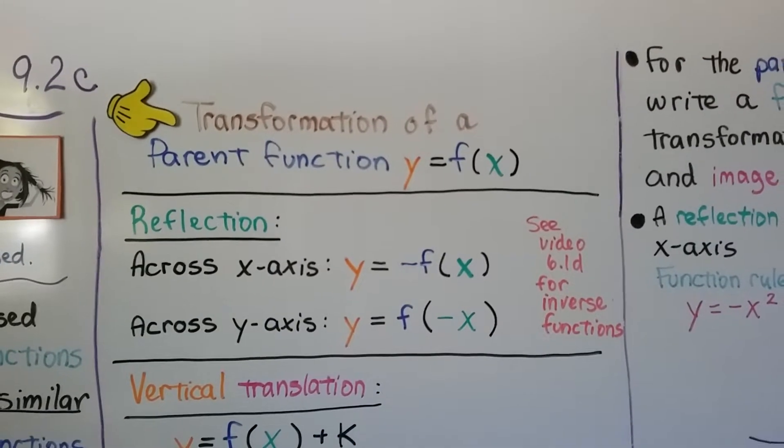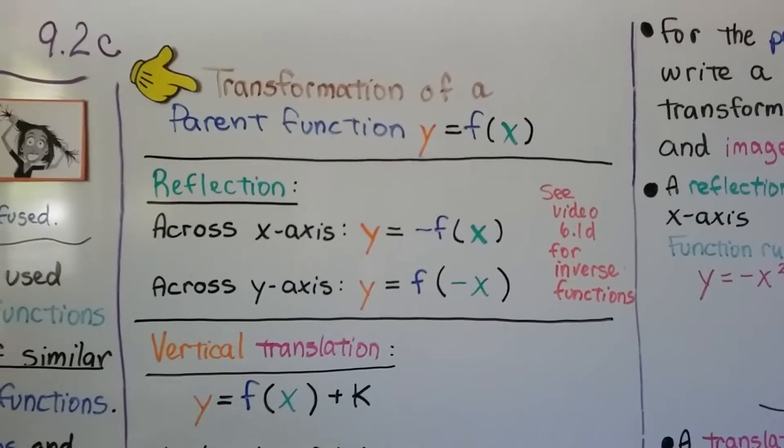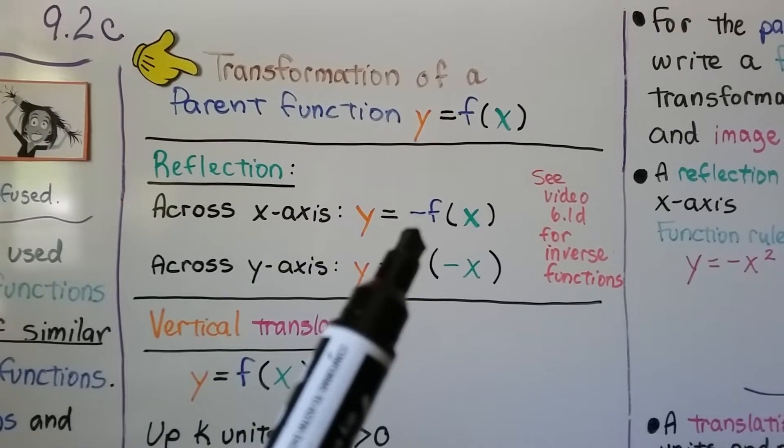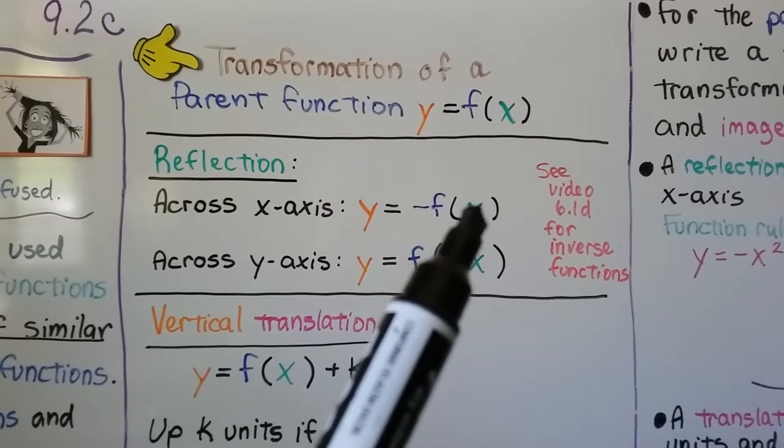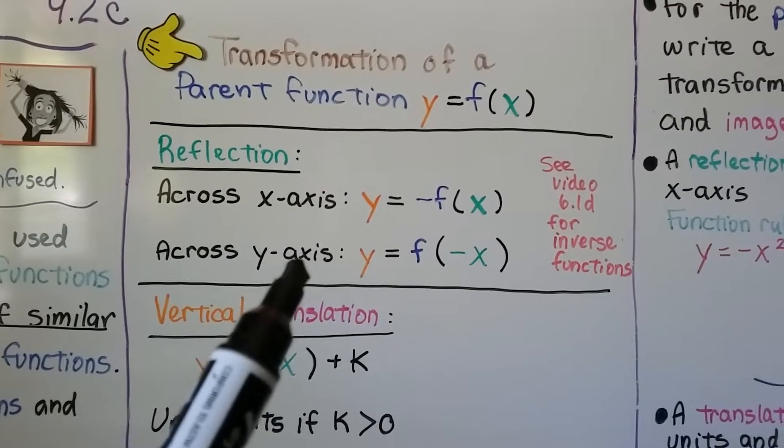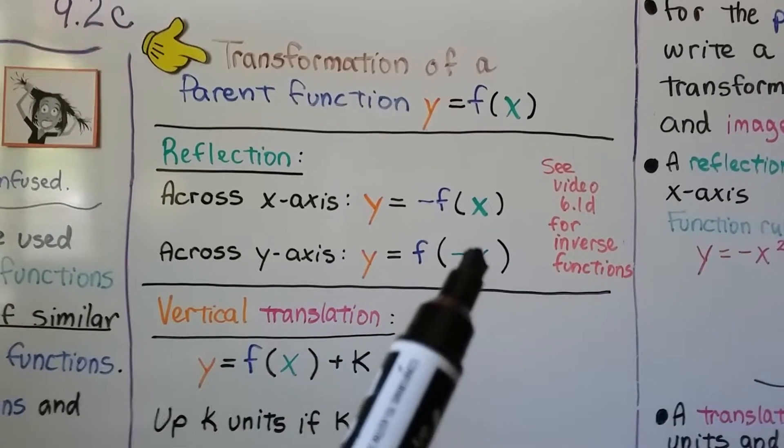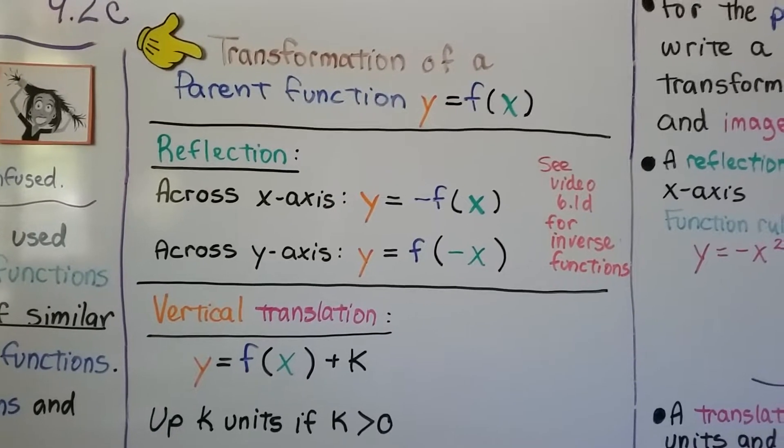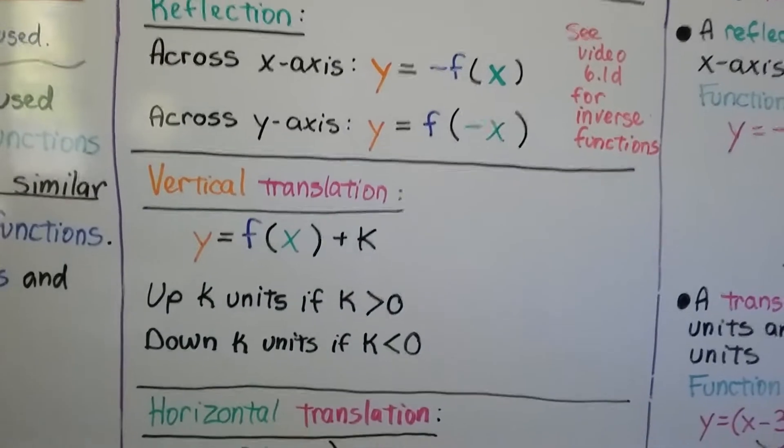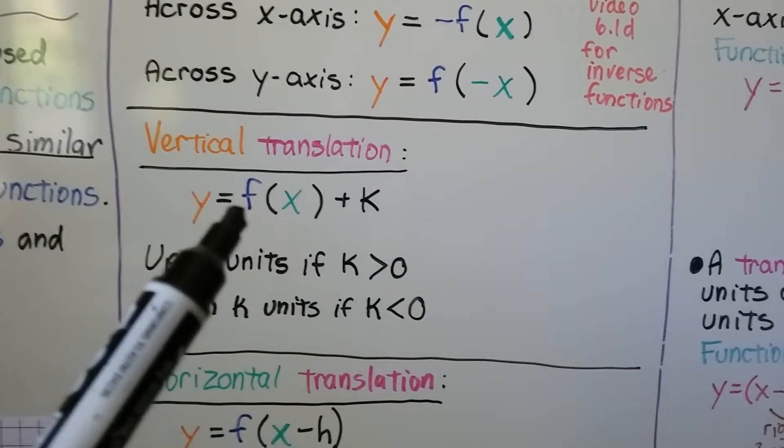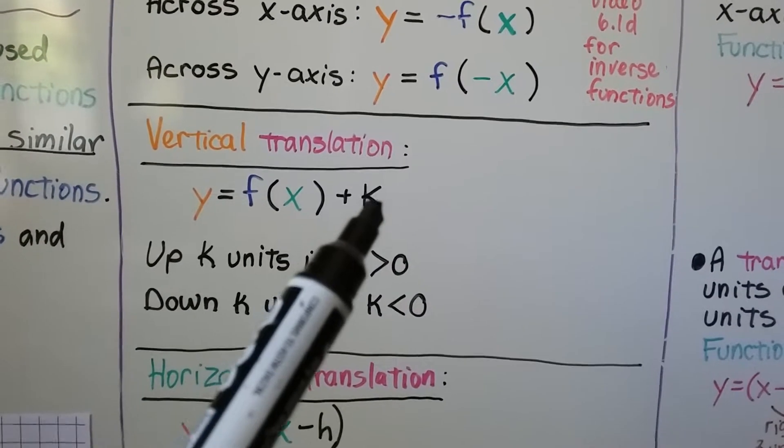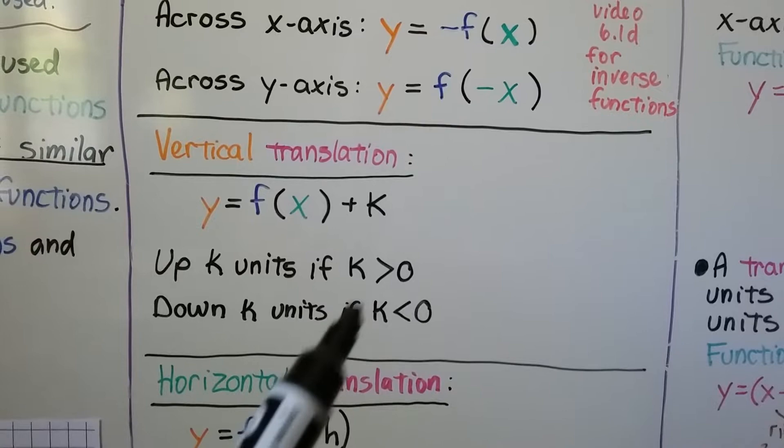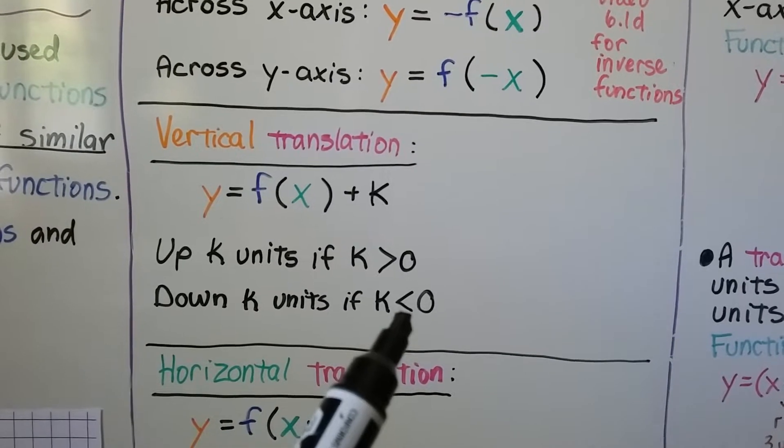Transformations of a parent function y equals f of x. For reflection across the x-axis, we would have y equals the negative function, the inverse function of x. For across the y-axis, we would have y equals f of negative x. If you don't know about inverse functions, we covered it in 6.1d and there will be a link in the description. For a vertical translation, y equals f of x plus k. It's going to be up k units if k is greater than zero, and it'll be down k units if k is less than zero.